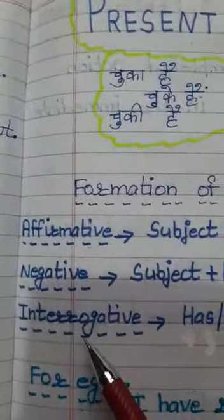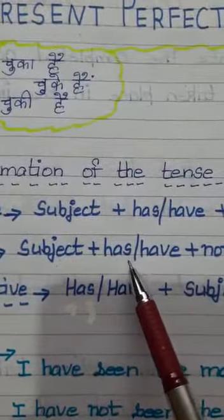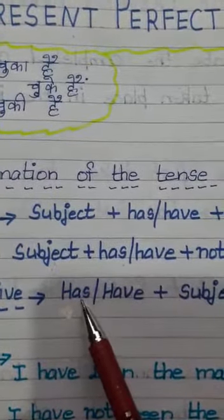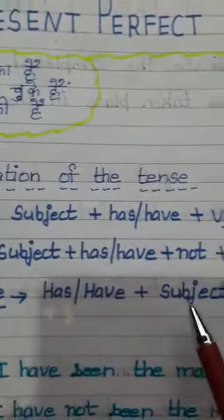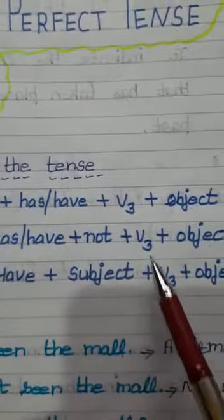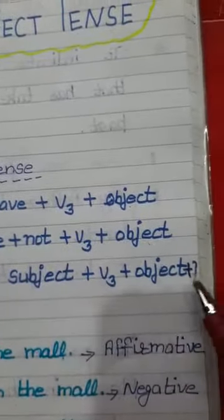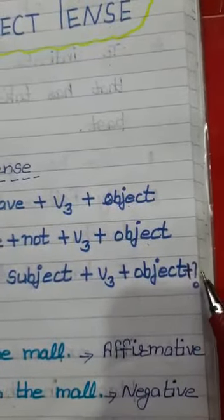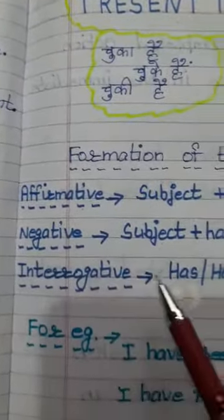For interrogative sentences, we put the helping verb has or have at the very first place, then comes: subject + third form of the verb + object. Don't forget to put a question mark at the end in interrogative sentences.